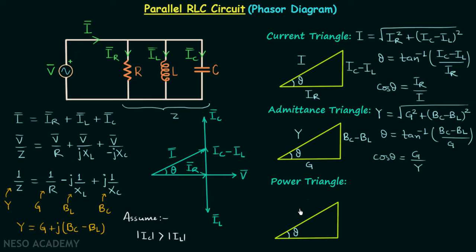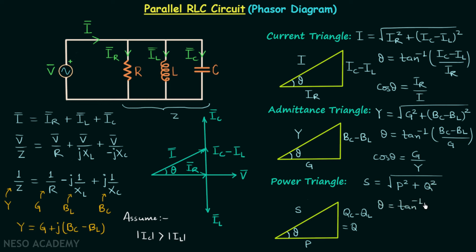The final triangle is the power triangle. This side is the apparent power S, this side is QC minus QL which is the net reactive power, and this side is the real power P. The apparent power equals the square root of P² plus (net reactive power)². The power factor angle θ equals tan⁻¹ of net reactive power over real power. cos θ, which is the power factor, equals P over S.